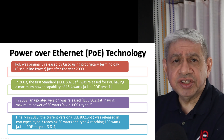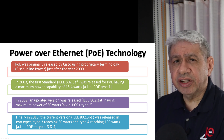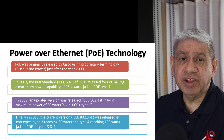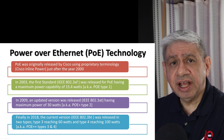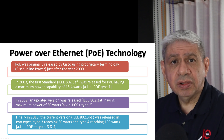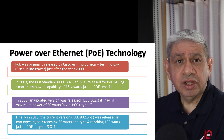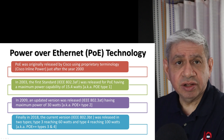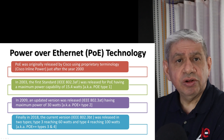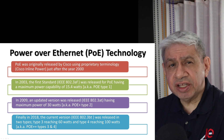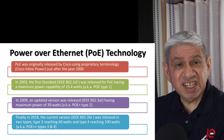However, there's an important distinction: what determines how much power can actually be delivered is the length of the cable. Just like speed is affected with Ethernet depending on cable length — make it too long and you'll have more errors and it will slow down — the same holds true with power. The cable itself has resistance over distance, as we refer to it in electrical engineering.